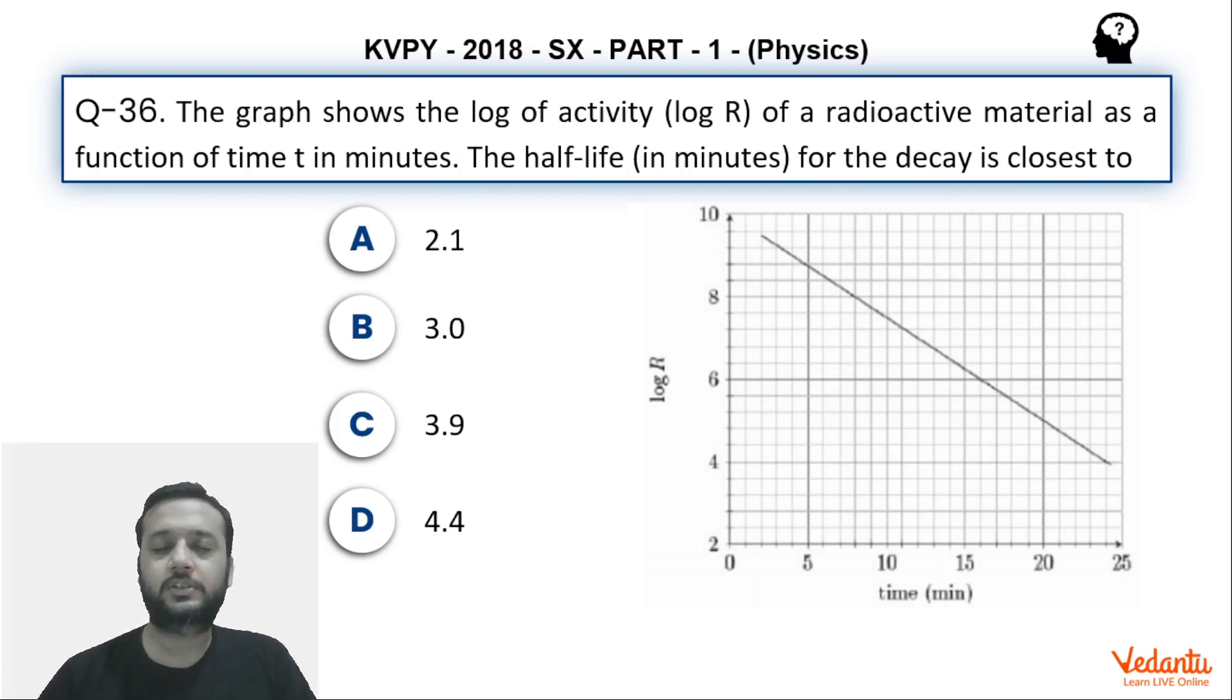So basically in this question, the graph between the log of activity and the time which is in minutes has been given to us and we have to find the half-life. So on the y-axis we have the graph of log of the activity and on the x-axis we have time in minutes.